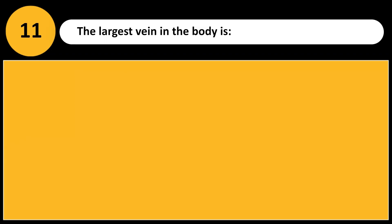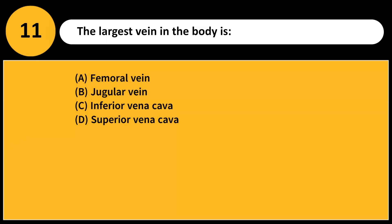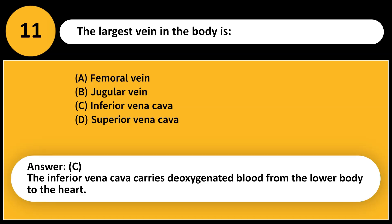The largest vein in the body is: A. Femoral vein. B. Jugular vein. C. Inferior vena cava. D. Superior vena cava. Answer: C. The inferior vena cava carries deoxygenated blood from the lower body to the heart.